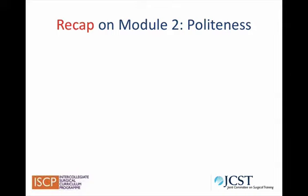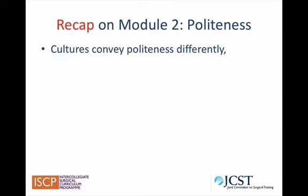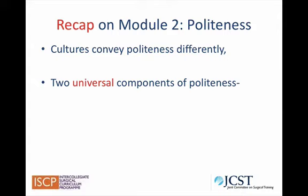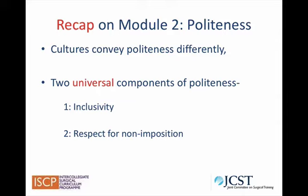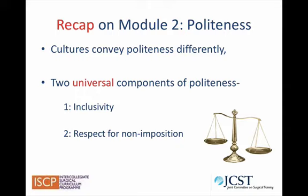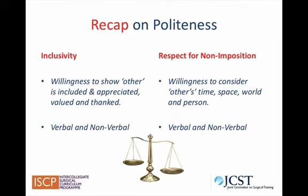A brief recap on Module 2. Politeness, or showing consideration for the other person, is conveyed differently according to cultural background. However, there are two universal components of politeness which occur in every culture. They are inclusivity and respect for non-imposition. Some cultures consider inclusivity more important for politeness, and other cultures consider respect for non-imposition more important. The first component is the ability to make the other person feel included, understood, appreciated and valued — this is called inclusivity, sometimes called positive politeness.